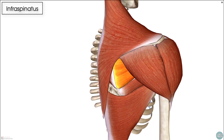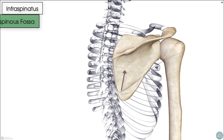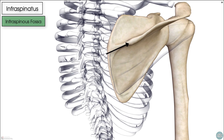The infraspinatus originates in the infraspinous fossa, and that's located on the posterior aspect of the scapula, inferior to the spine of the scapula.